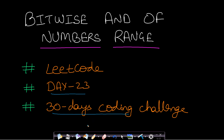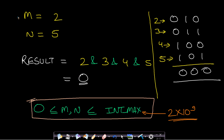In this problem we are given a range of m and n, where m is the lower bound and n is the upper bound. We are required to find the bitwise AND of all the numbers in this given range, inclusive of m and n. In this example, we find the bitwise AND from two to five, and the result is zero.